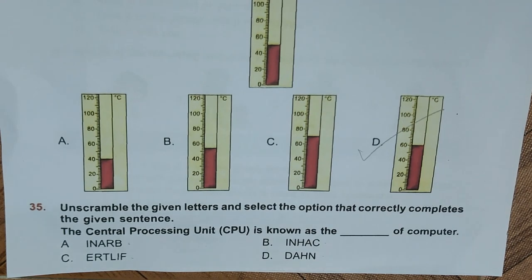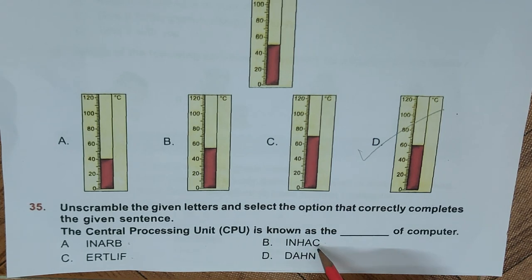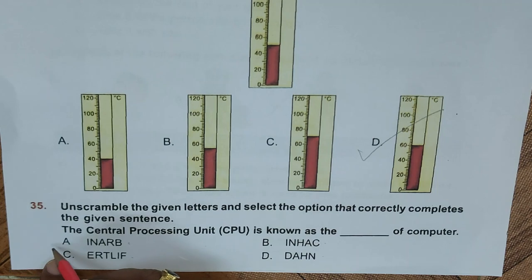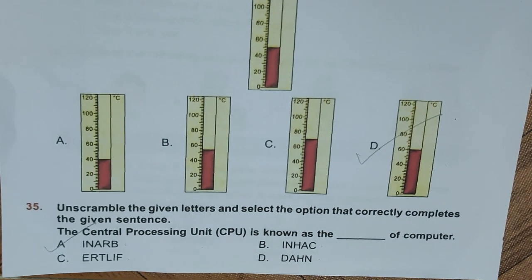Question 35: Unscramble the given letters and select the option that correctly completes the sentence. The Central Processing Unit (CPU) is known as the dash of a computer. Options: A. Brain, B. Chain, C. Filter, D. Hand. CPU is known as the brain of the computer. Hence option A, Brain, is the right answer. With that, we complete this worksheet.